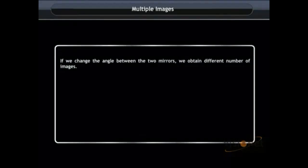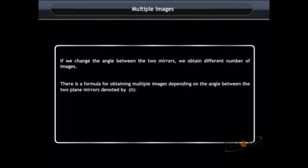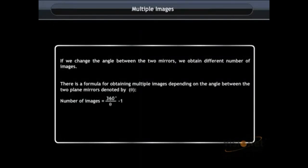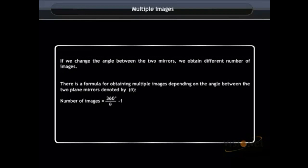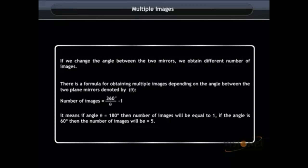If we change the angle between the two mirrors, we obtain different number of images. There is a formula for obtaining multiple images depending on the angle between the two plane mirrors denoted by theta. Number of images equals 360 degrees upon theta minus 1. It means if angle theta equals 180 degrees, then number of images will be equal to 1. If the angle is 60 degrees, then the number of images will be equal to 5.